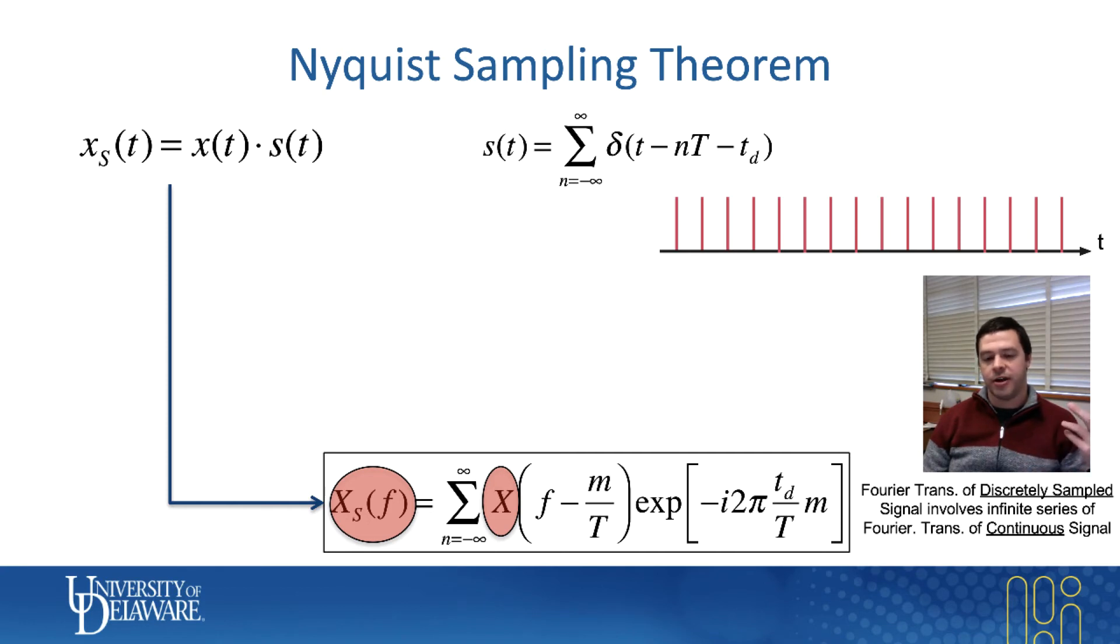So the lock-in amplifier is detecting your signal at a particular frequency. That's what the Fourier transform is.